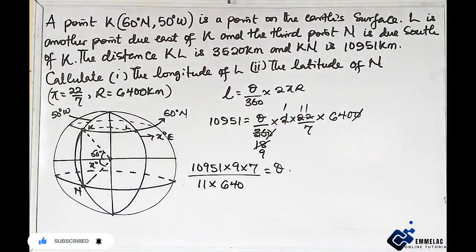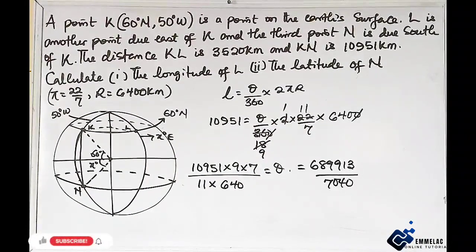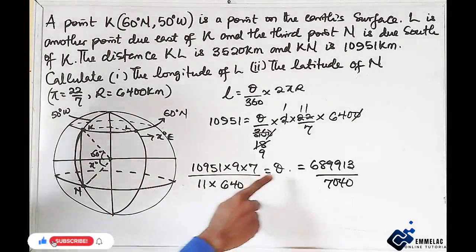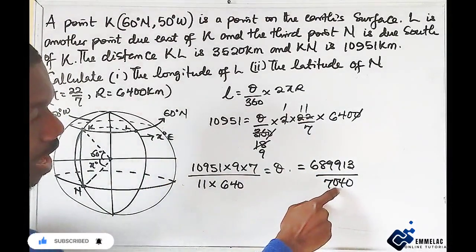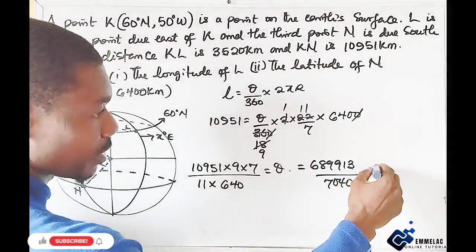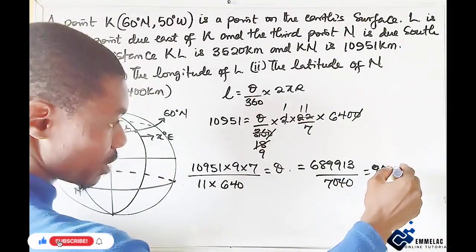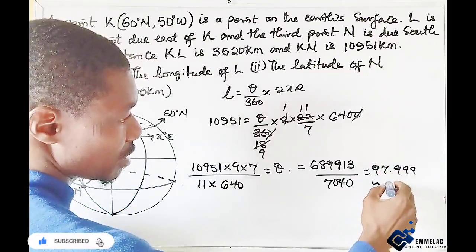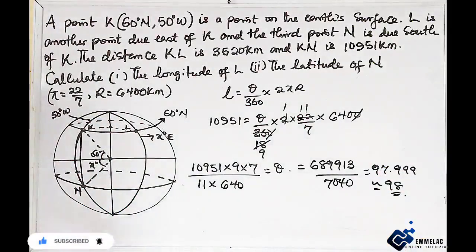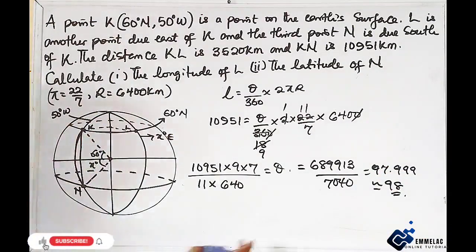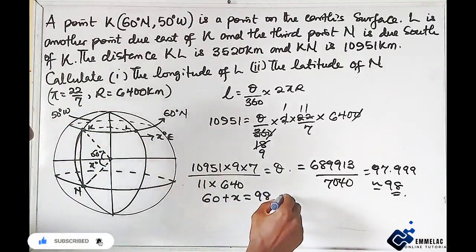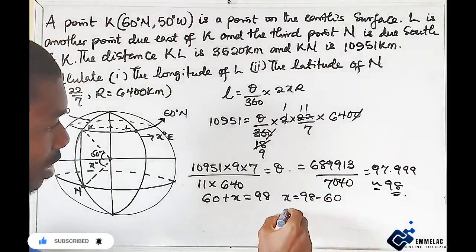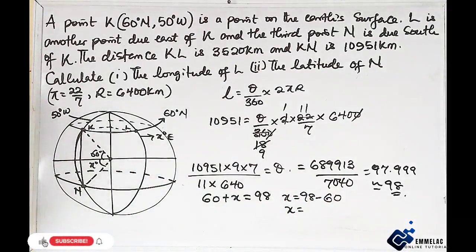Punching our calculator to give us the value of theta. The product of the numerator is 689913, and the product of the denominator is 7040. When we divide this fraction, we have 97.999, approximately 98. It implies that the total angle here is 98, which gives us 60 plus X equals 98. X will be 98 minus 60, this will give us 38 degree.